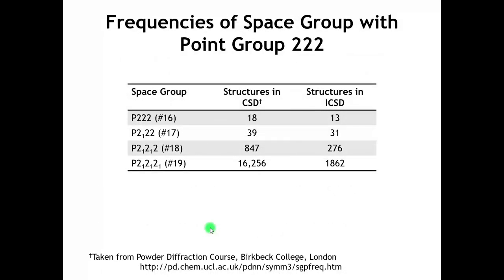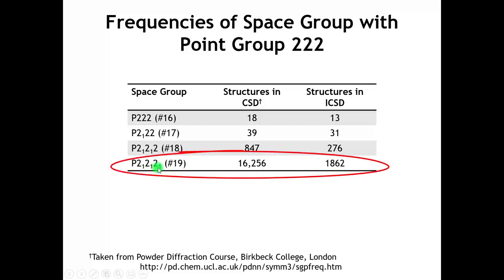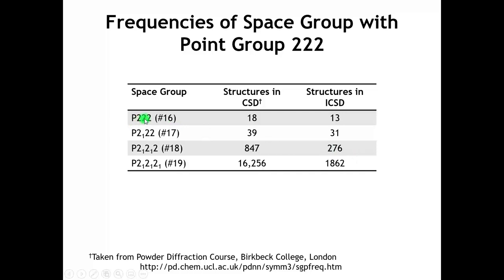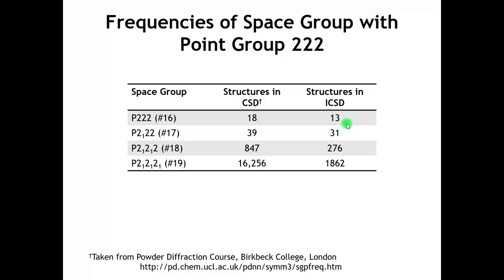Honing in further, let's look at the space groups arising from a primitive orthorhombic Bravais lattice with point group 222 — where we have two-fold rotations or 2₁ screws, but no mirrors or glides. Look at the striking change in frequency of crystal structures in the Cambridge database (organic compounds) versus the ICSD (inorganic compounds) as we add more screw axes. There is a very strong preference for three 2₁ screws, which accounts for many crystal structures, whereas P222, with all proper rotation axes, is in fact very rare.